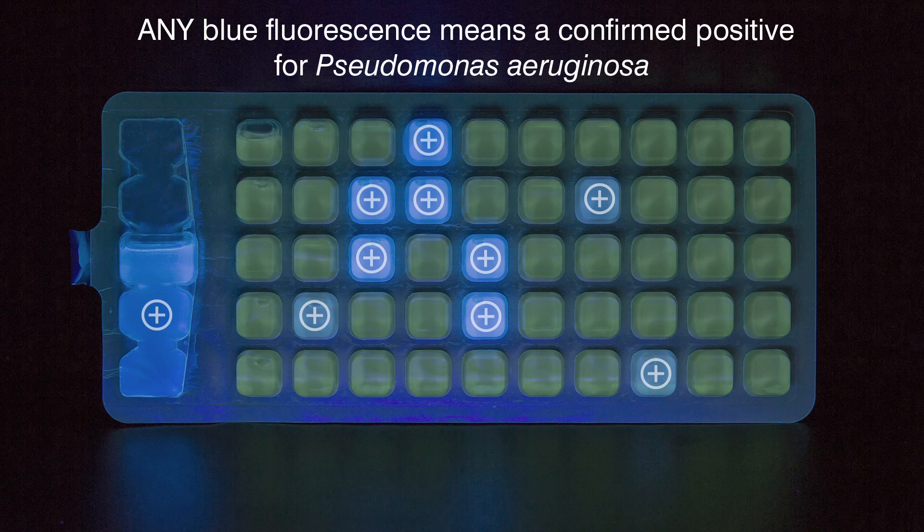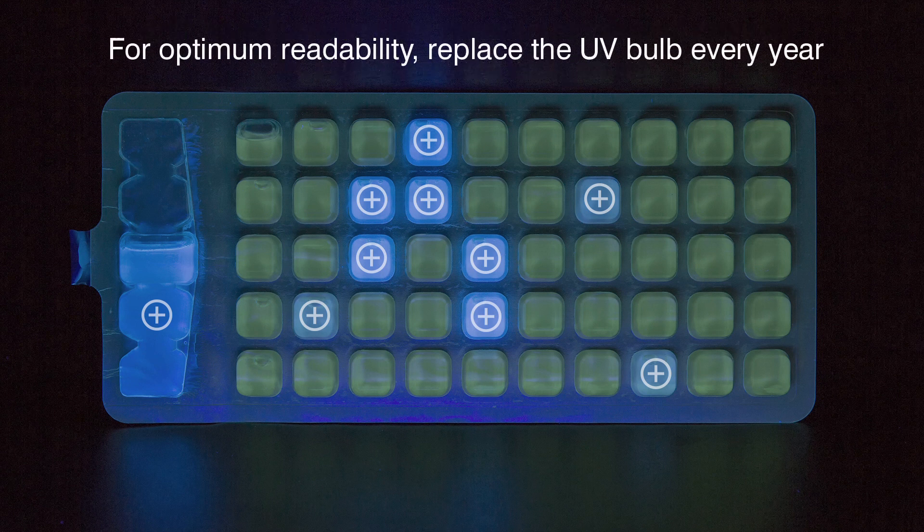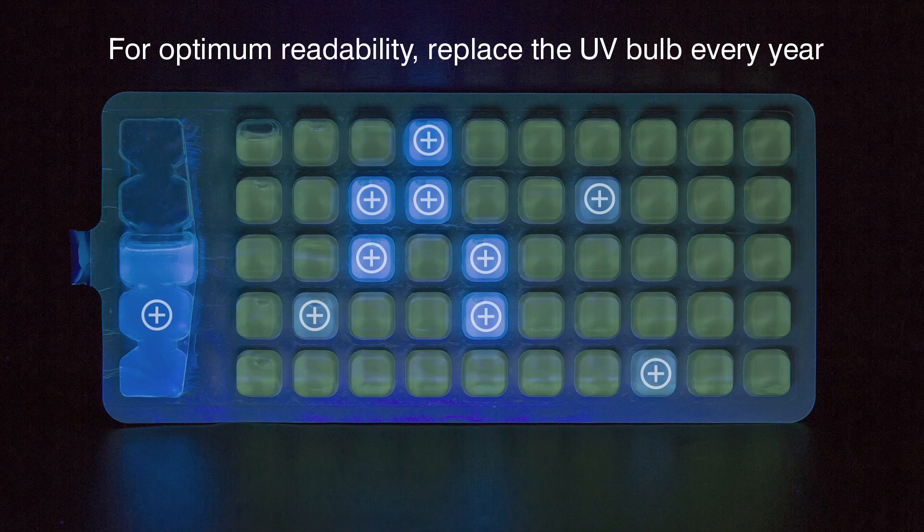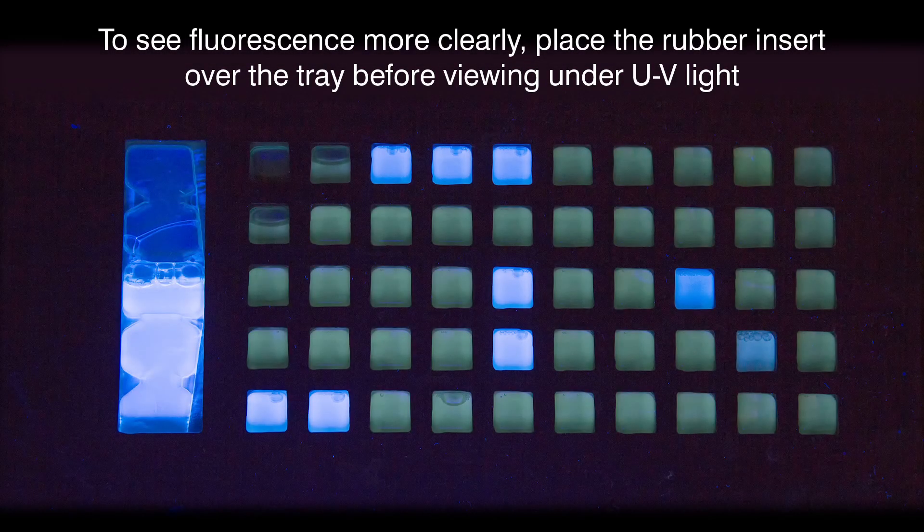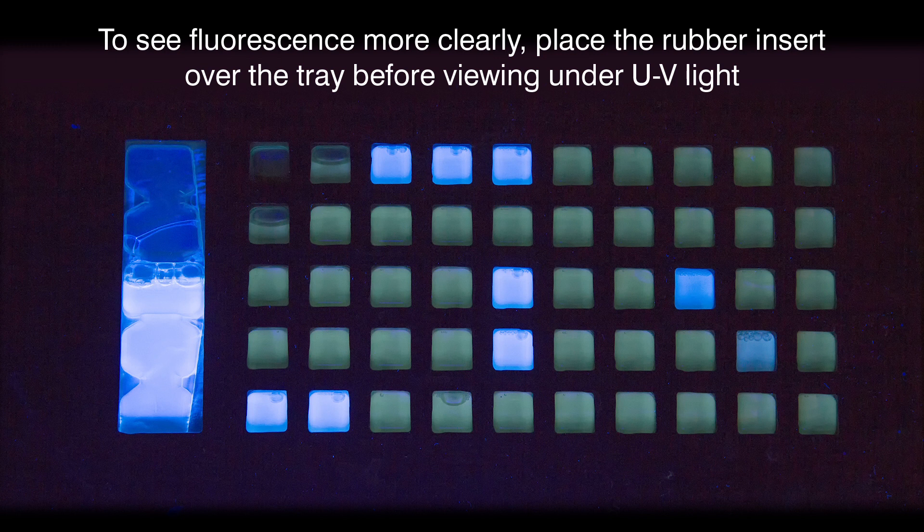Remember these tips. Any blue fluorescence means a confirmed positive for Pseudomonas aeruginosa. For optimum readability, replace the UV bulb every year. To see fluorescence more clearly, place the rubber insert over the tray before viewing under UV light.